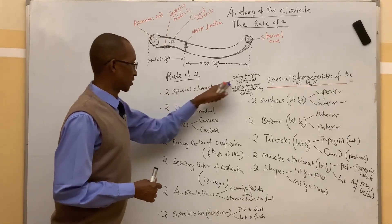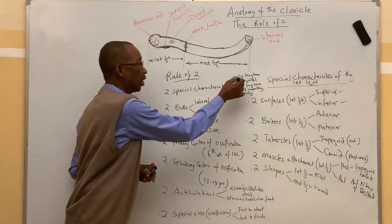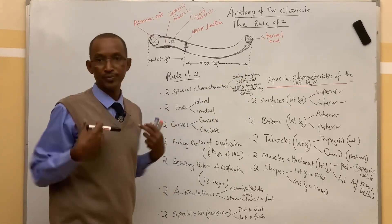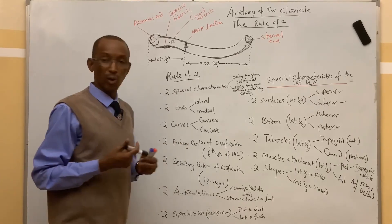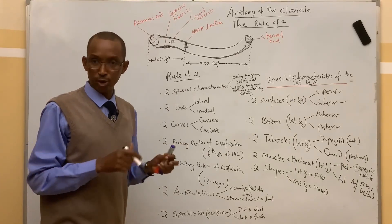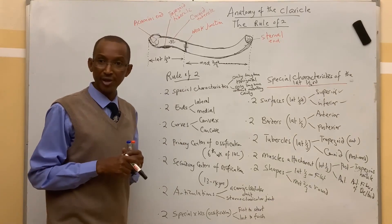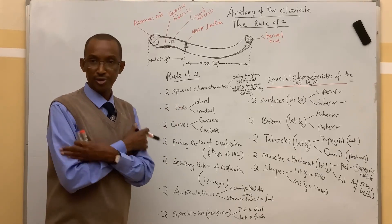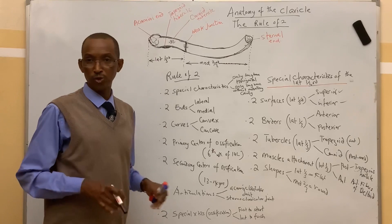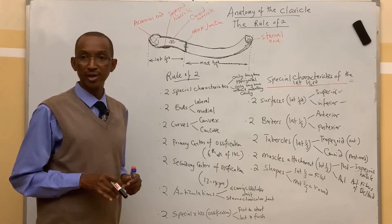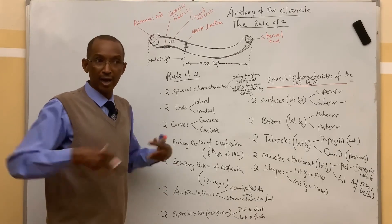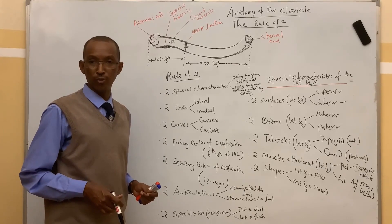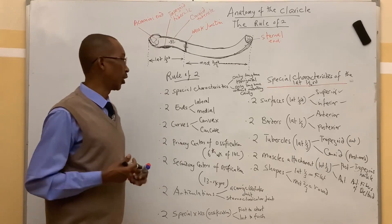The first characteristic is that it is the only long bone in the human body that lies horizontally across the trunk. It is also the only long bone in the human body that is without a medullary cavity. All other long bones — humerus, radius, ulna, femur, and so on — all have a medullary cavity and lie vertically when standing in anatomical position, whereas the clavicle lies horizontally.